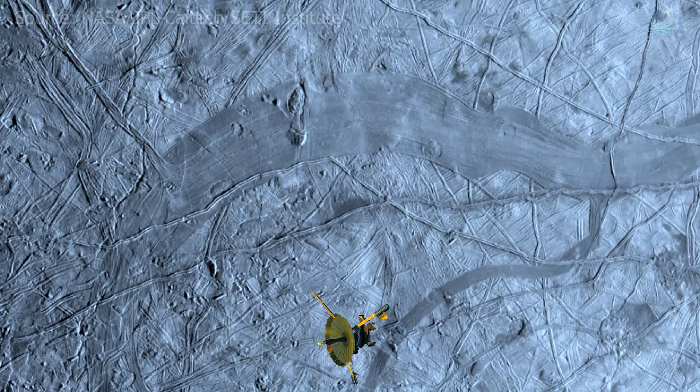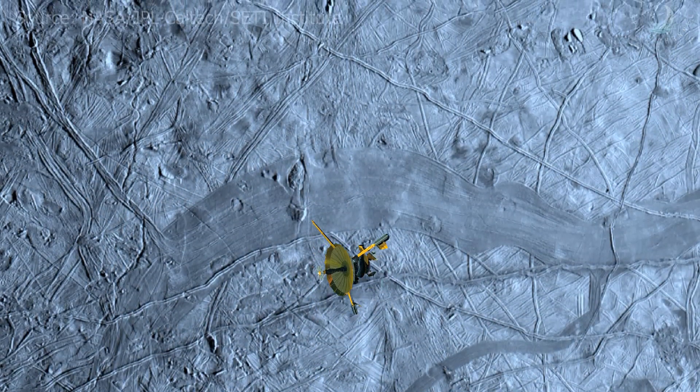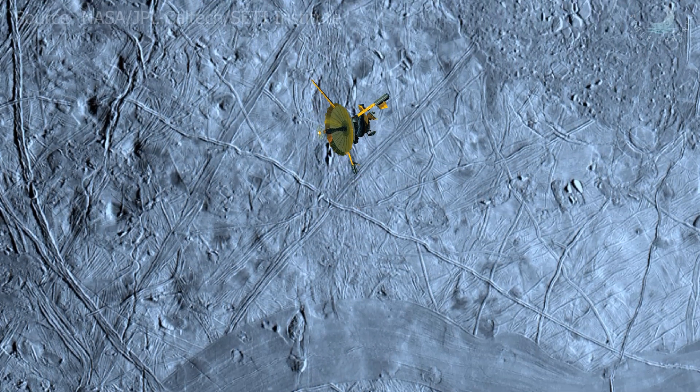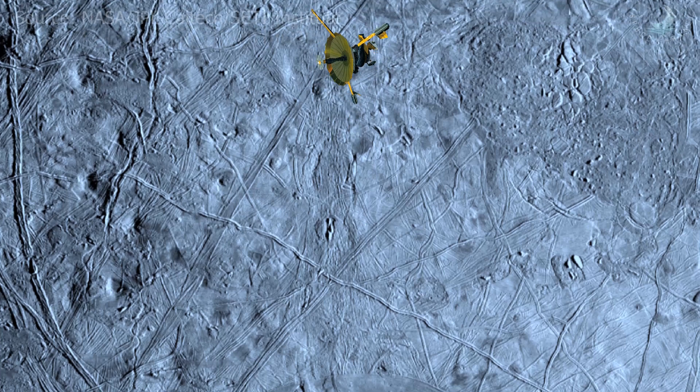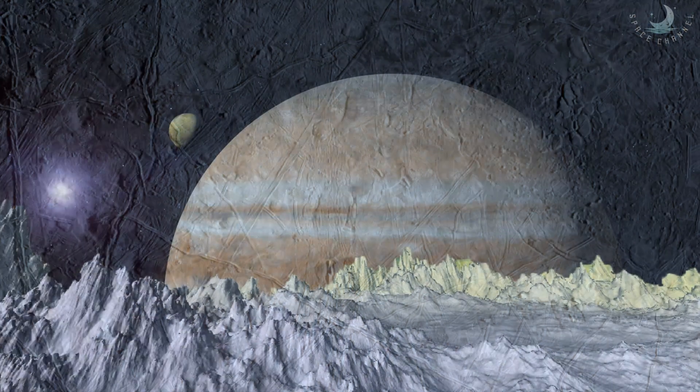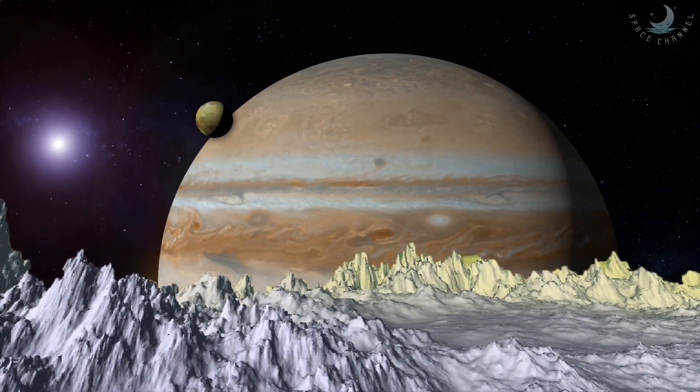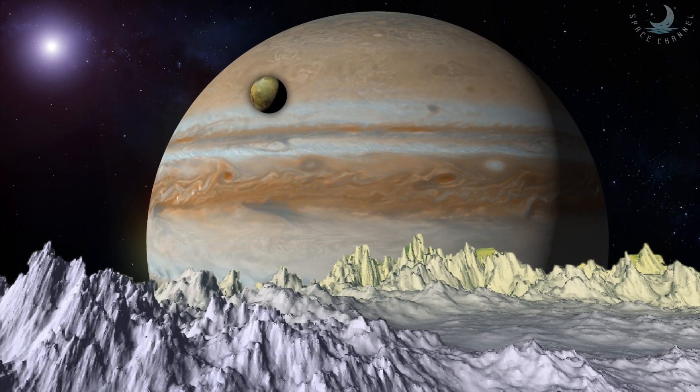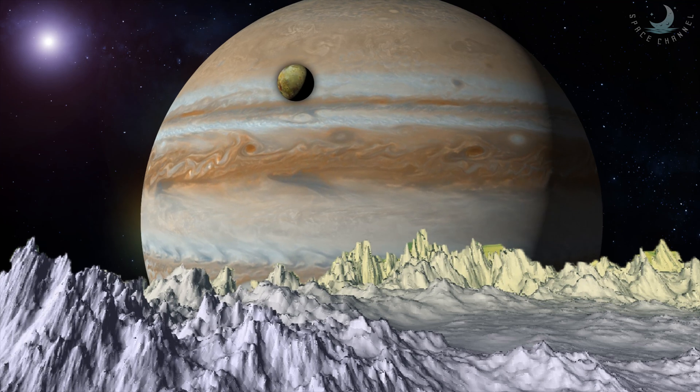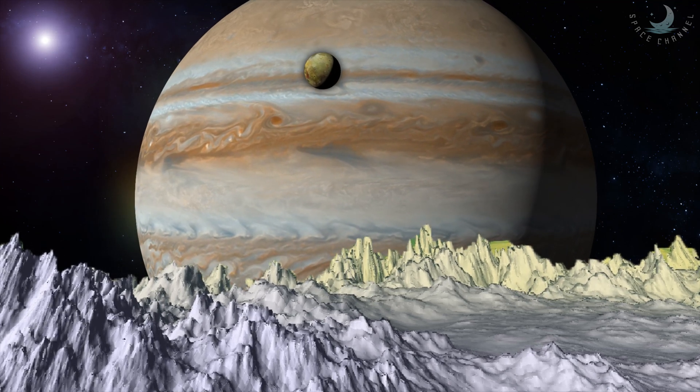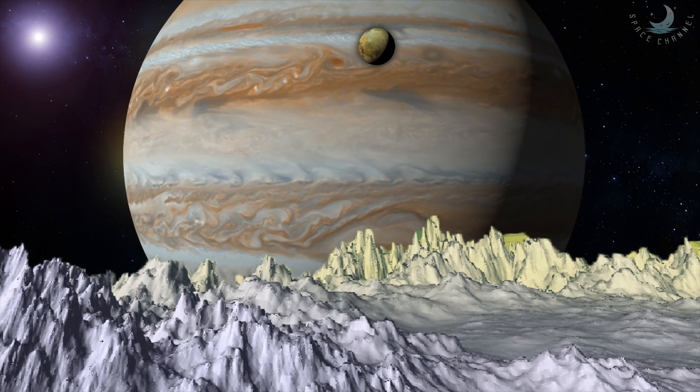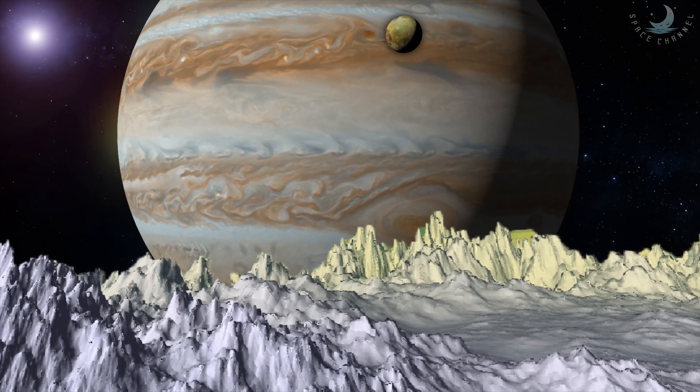Europa is the smoothest known object in the solar system, lacking large-scale features such as mountains and craters. However, according to one study, Europa's equator may be carved in icy spikes called penitents, which may be up to 15 meters high due to direct overhead sunlight on the equator, causing the ice to sublime forming vertical cracks.